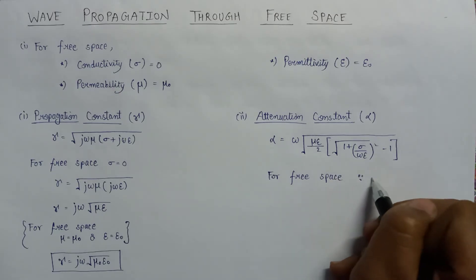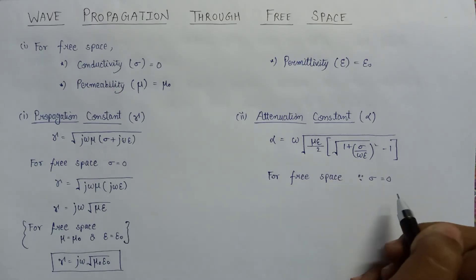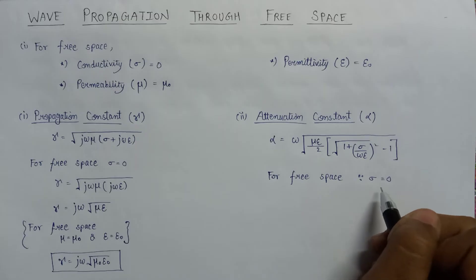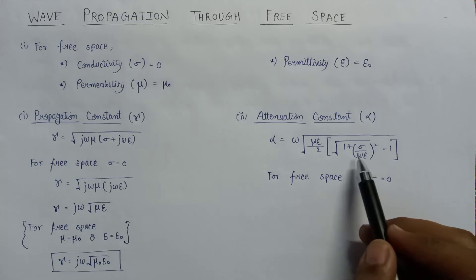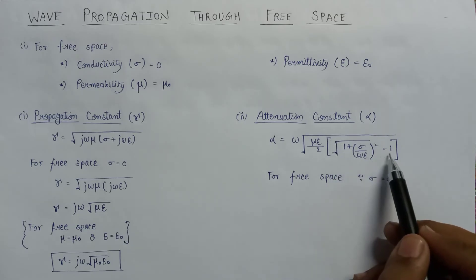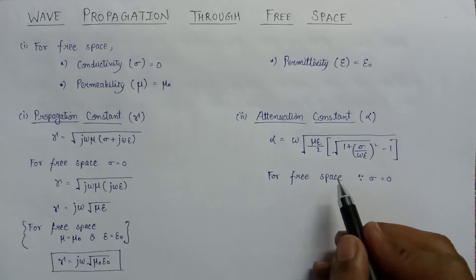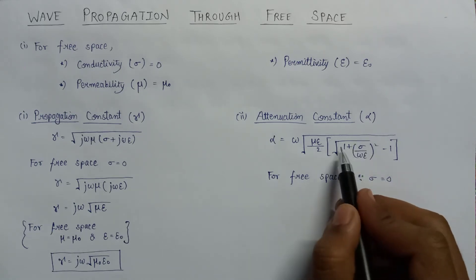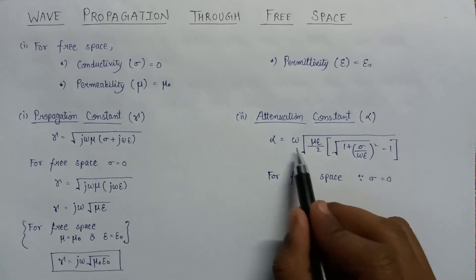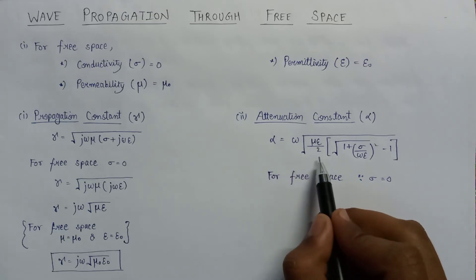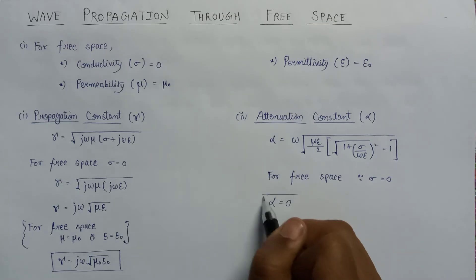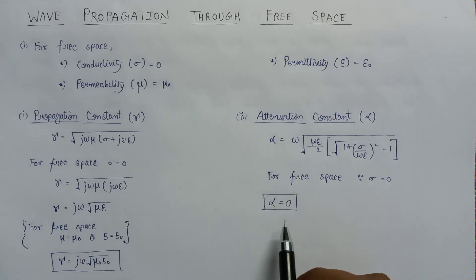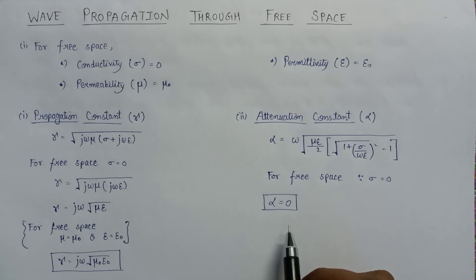Since for free space sigma is always equal to zero, applying sigma equal to zero makes the term (sigma/omega·epsilon)² equal to zero, leaving 1 minus 1, which equals zero. This zero multiplied with omega times the square root of mu·epsilon divided by 2 gives a final result of zero. Therefore, the attenuation constant alpha equals zero when the wave is propagating in free space.